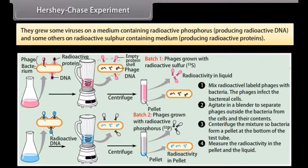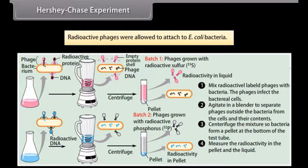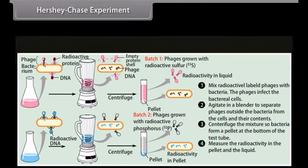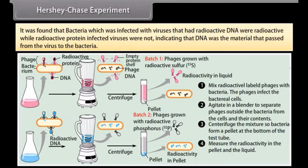They grew some viruses on a medium containing radioactive phosphorus, producing radioactive DNA, and others on a radioactive sulfur-containing medium, producing radioactive proteins. Radioactive phages were allowed to attach to E. coli bacteria. It was found that bacteria infected with viruses that had radioactive DNA were radioactive, while those infected with radioactive protein viruses were not — indicating that DNA was the material that passed from the virus to the bacteria.